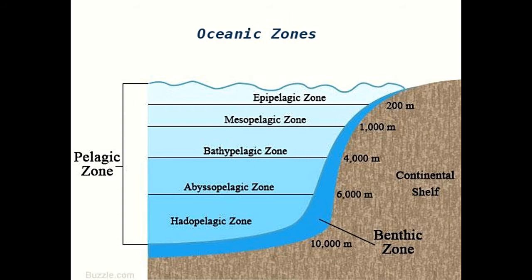Benthic Zone: The benthic zone comprises a layer of water in a water body which is present just above its bottom. Thus, it includes the water column in contact with the ocean floor, riverbed, or the bottom of a lake. Depending upon the depth of the water body, the location of this zone can be anywhere from a couple of feet below the surface, in case of shallow rivers, to thousands of feet, in case of large oceans.